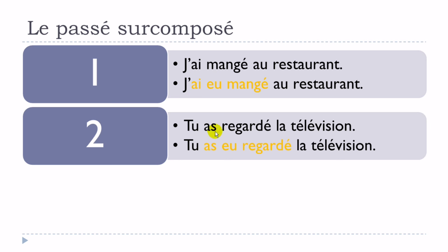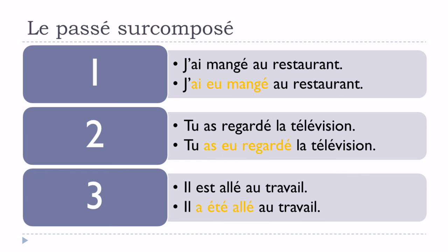Second example: tu as regardé la télévision — passé composé — avoir at the present tense plus the participe passé. For the passé surcomposé: tu as eu regardé la télévision. The 'regardé' form stays exactly the same. It's the first part that changes: for passé composé you have avoir at the present, and for passé surcomposé you have avoir at the passé composé form.